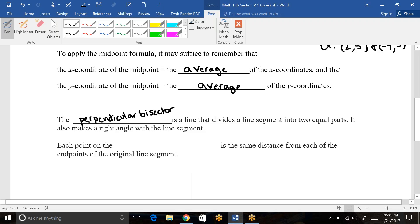The perpendicular bisector is a line that divides a line segment into equal parts, two different equal parts, and it creates a right angle with the line segment. Each point on the perpendicular bisector is the same distance from each of the endpoints of the original line segment.